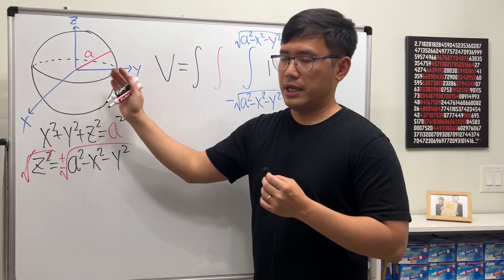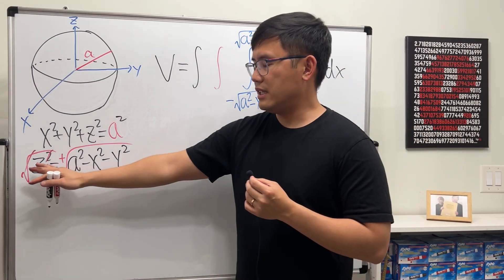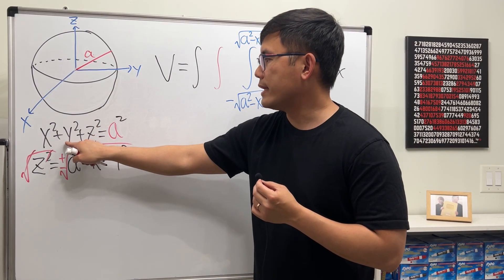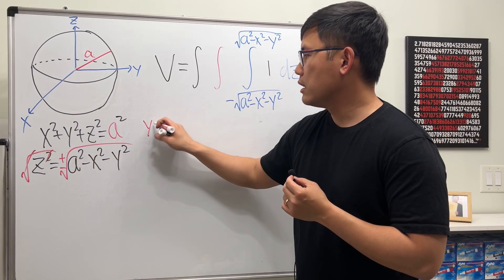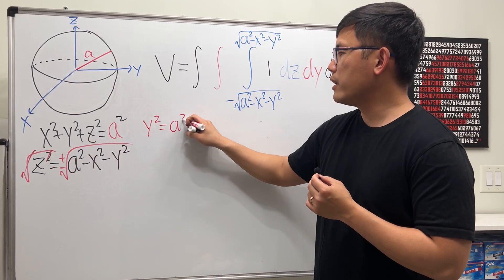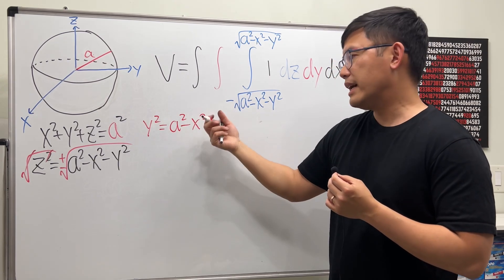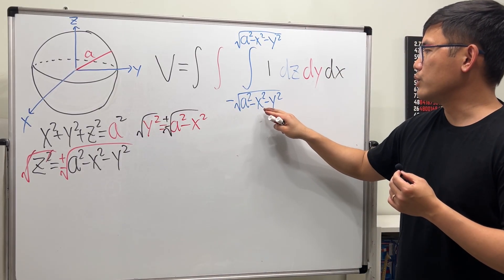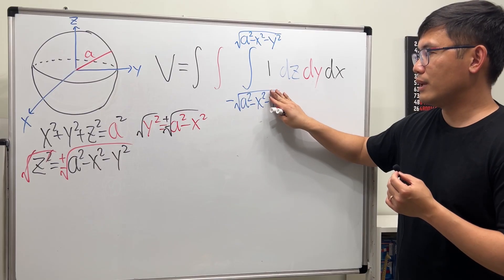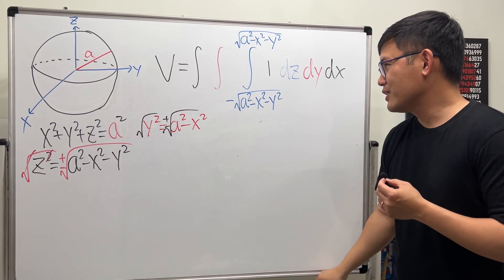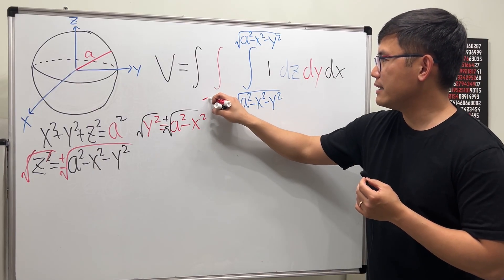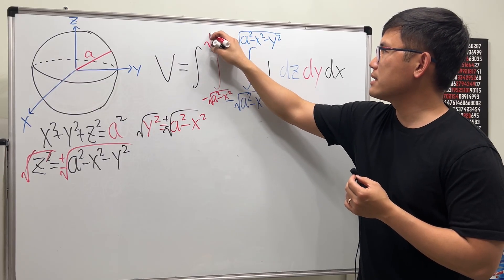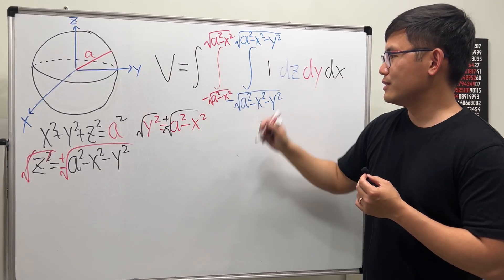Next we look for the y limits. On the xy-plane, we don't need to worry about z anymore, so x squared plus y squared equals a squared. Then y squared equals a squared minus x squared, and taking the square root with plus or minus, dy goes from negative square root of (a squared minus x squared) up to positive square root of (a squared minus x squared).